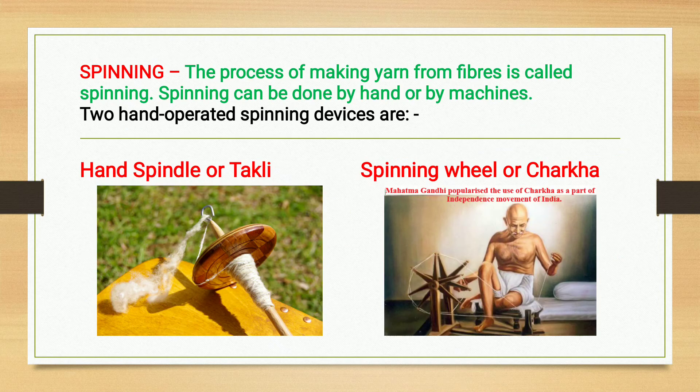Spinning. The process of making yarn from fibers is called spinning. Spinning can be done by hand or by machines. Two hand-operated spinning devices are: first, the hand spindle or takli; and second, the spinning wheel or charkha. Mahatma Gandhi popularized the use of the charkha as part of the independence movement of India.